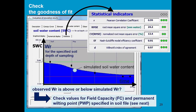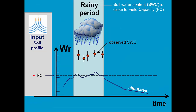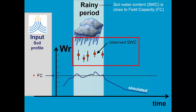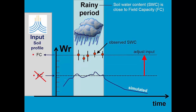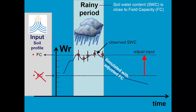If the observed water content in the root zone is above or below the simulated one, we might check the values for field capacity and wilting point as specified in the soil file. Here we see an example where field capacity was not well selected. The simulated soil water content during a rainy period will be close to field capacity. If the observed data is far above the simulated data, we know that field capacity is not well selected. By adjusting field capacity in the soil file and running simulations again, we can get a good match between observed and simulated soil water content.